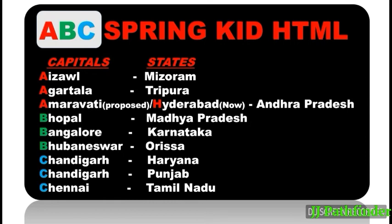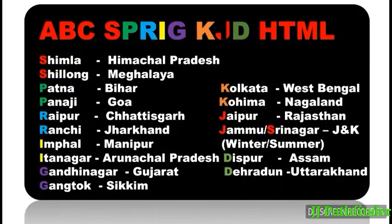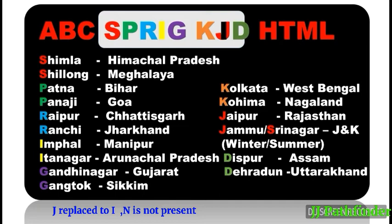Chandigarh — Punjab, Chennai — Tamil Nadu. Next, consider the code word SPRING KID. Each letter in SPRING KID indicates the starting letters of two capitals. Shimla — Himachal Pradesh, Shillong — Meghalaya, Patna — Bihar, Panaji — Goa, Raipur — Chhattisgarh.